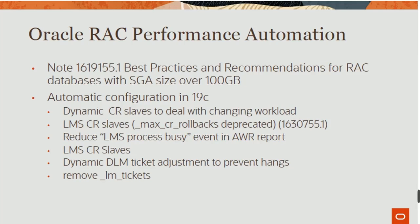All of the RAC performance automation — note 1619155.1 — best practices and recommendations for RAC, listed as JSH over 200 GB. Automatic configuration in 19c: dynamic CR values deal with changing workloads, LMSCR slaves with dynamic CR.